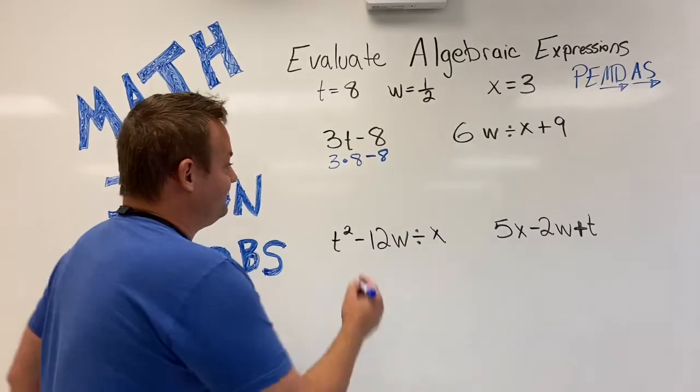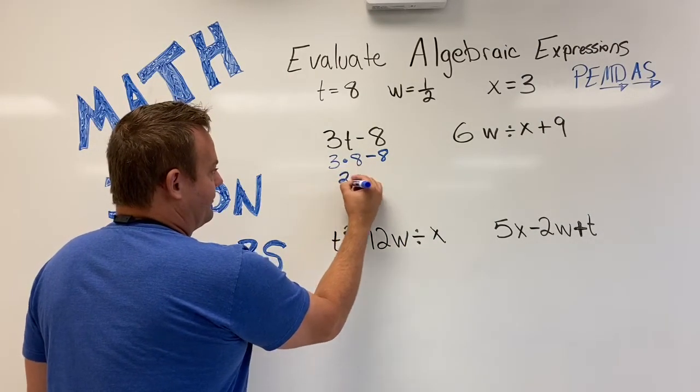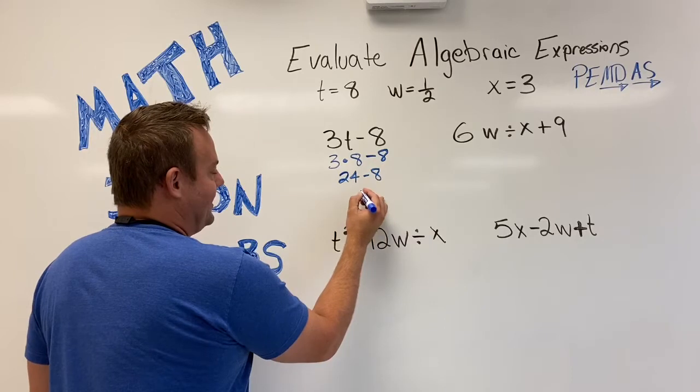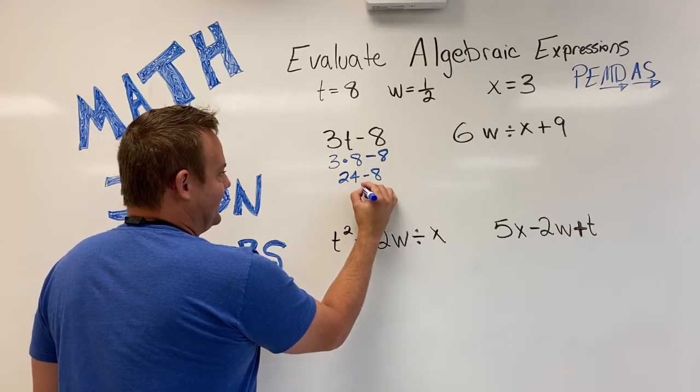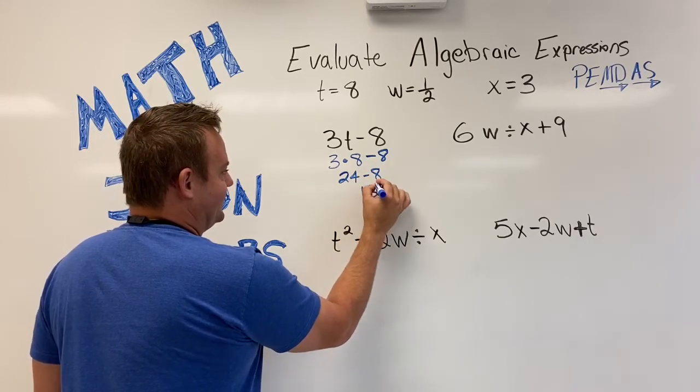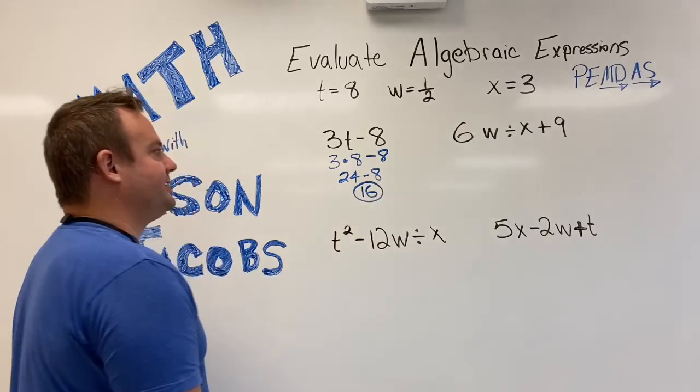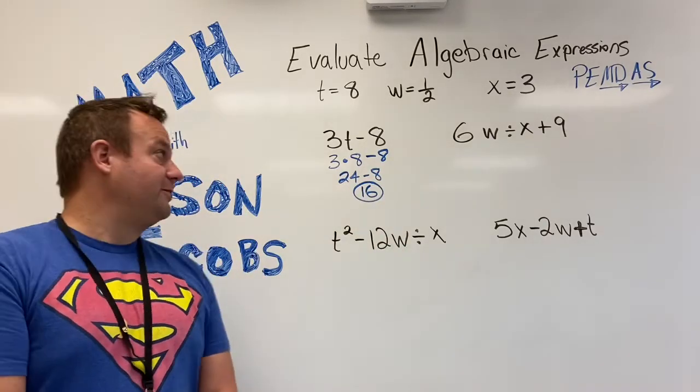So here we go. Multiplication first. So we have 24 minus 8. 24 minus 8, that is 16. So we evaluated the first algebraic expression.